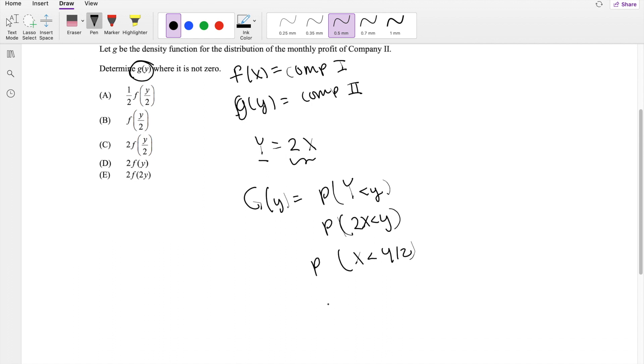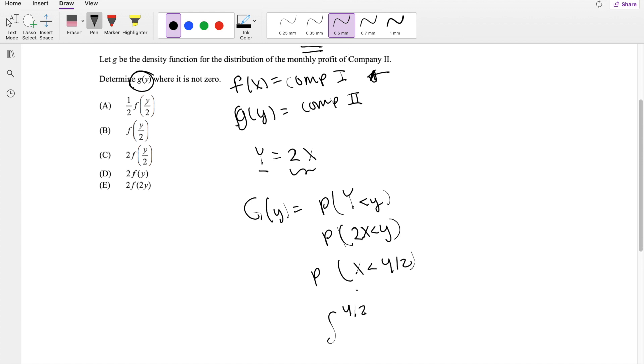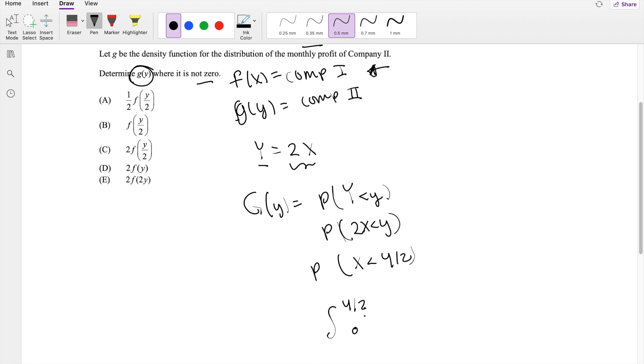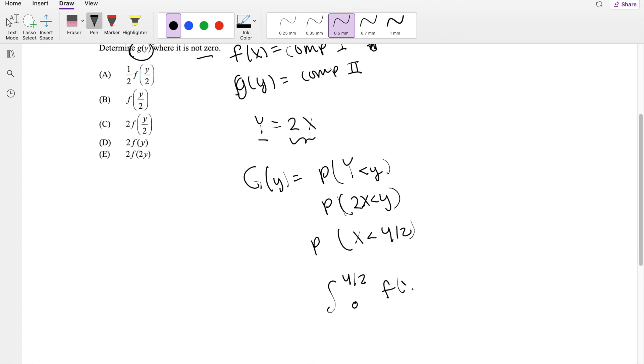And the thing is, we already know what probability of X is. We know that probability of X has a function here. So plugging it in there, the upper bound is going to be Y over 2, and we're looking for where it's not 0, so this is greater than 0 of F of X, DX.